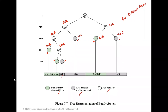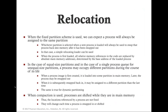The buddy system is a reasonable compromise overcoming the disadvantages of both fixed and variable partitioning. In modern operating systems, virtual memory based on paging and segmentation is superior, so the buddy system is less commonly used. However, it has found application in parallel systems as an efficient allocation/release mechanism, and a modified form is used for Unix kernel memory allocation.